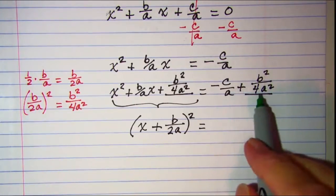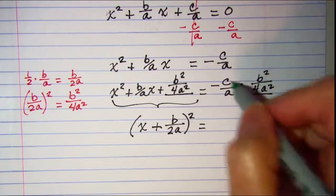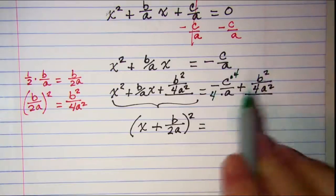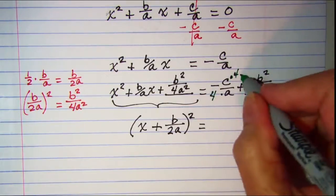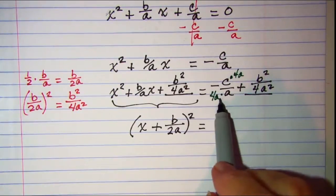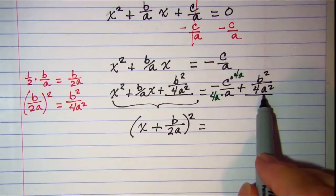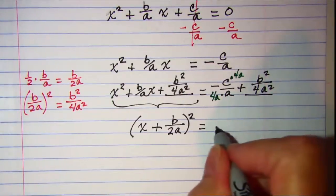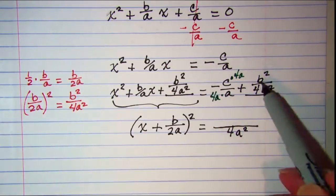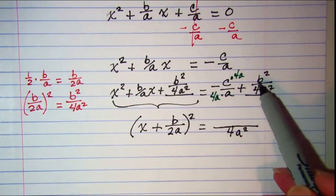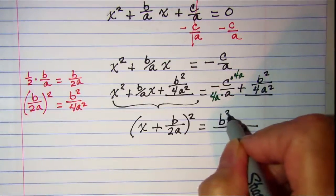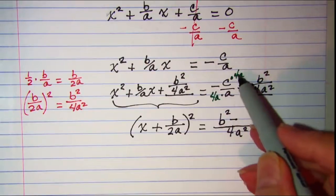I need a common denominator, so I'll multiply top and bottom by 4, and I need a squared so I'll multiply top and bottom by a as well. Now I have 4a squared in the denominator of both terms so I can combine them. I'm going to write the positive term first: b squared minus 4ac.